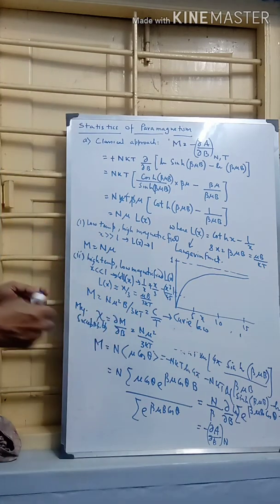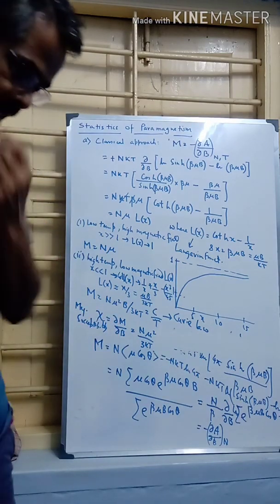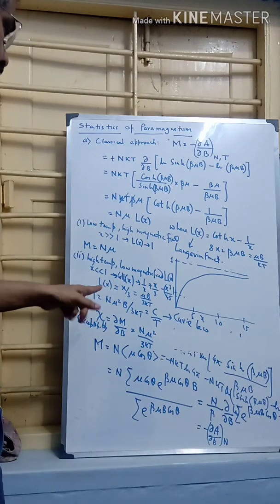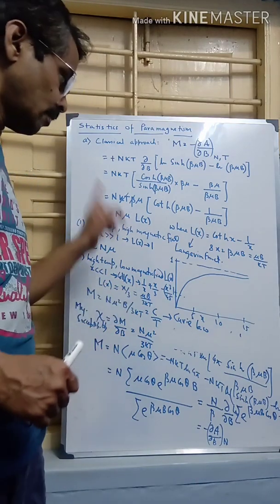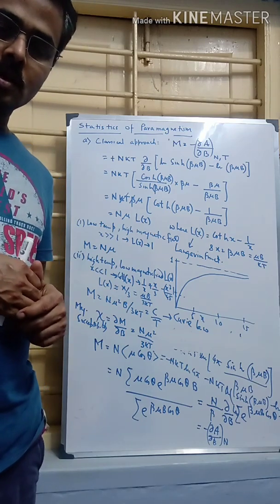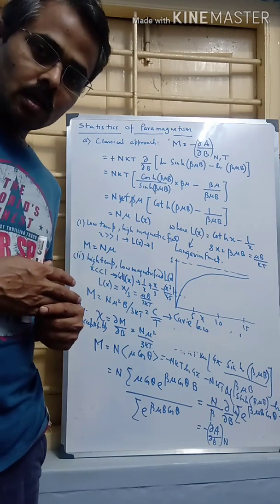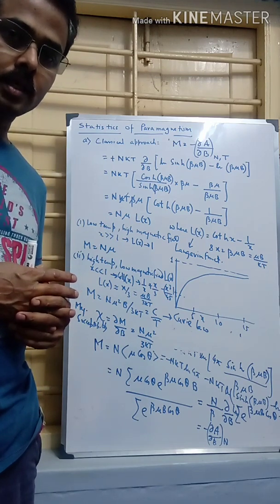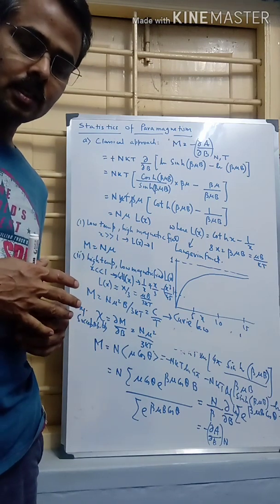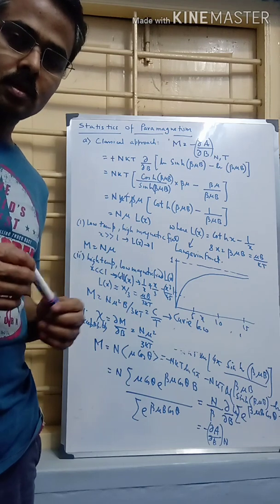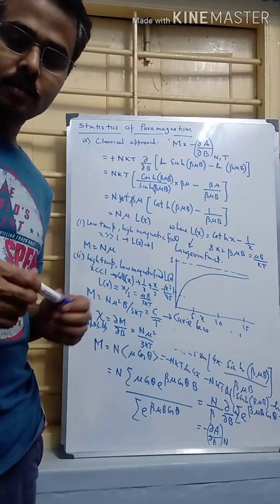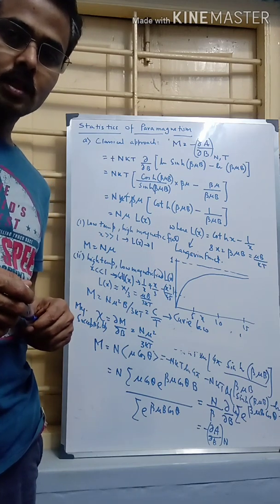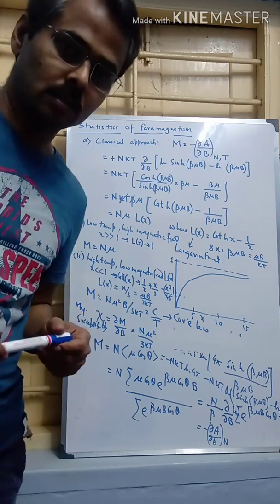So Curie's law can be derived from the canonical ensemble formalism. In our next class, we will see the quantum mechanical approach, where the quantum mechanical expression for the magnetic moment will be utilized to further derive the expression for magnetization. Thank you.